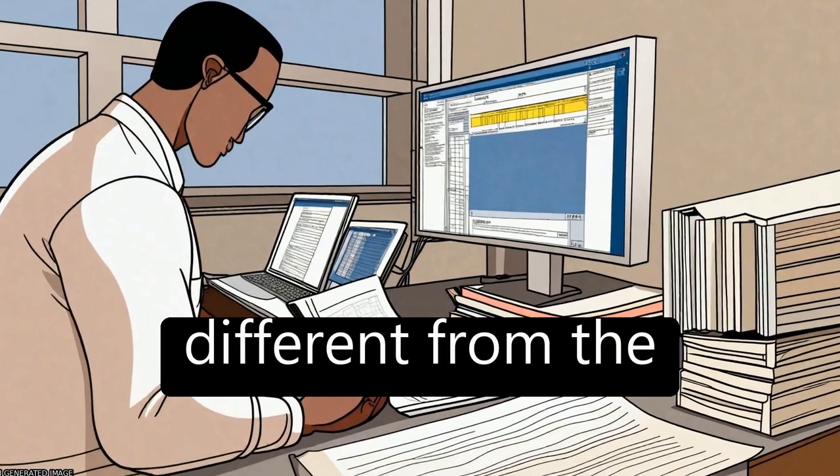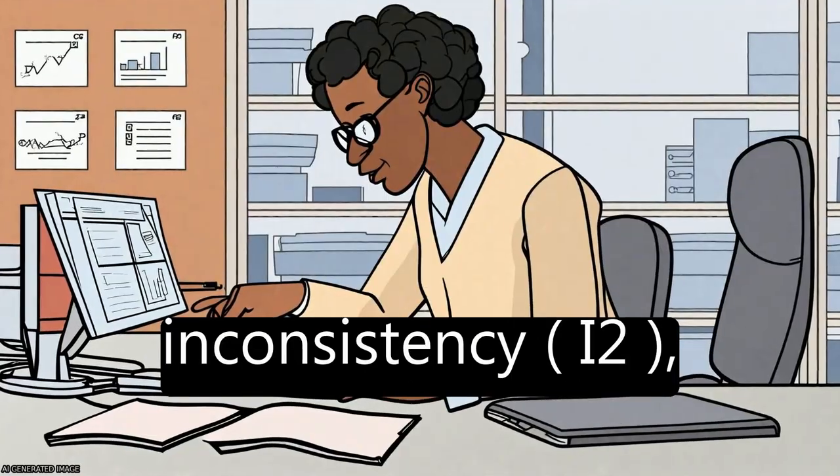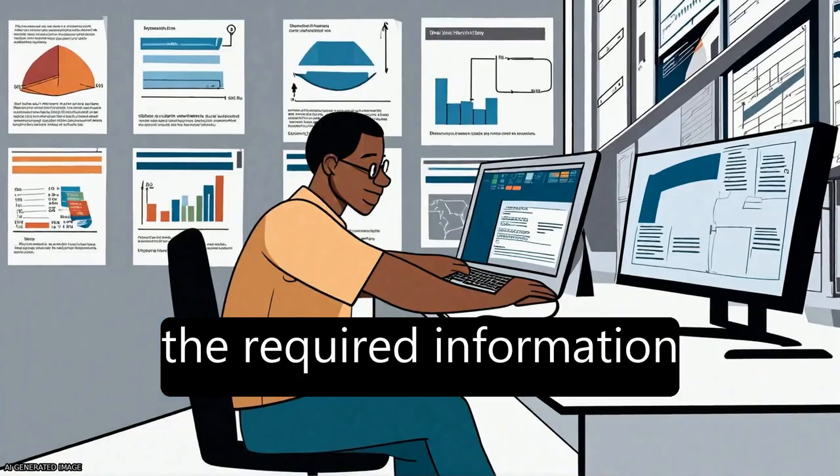The paper shows that D2 is different from the commonly used measure of heterogeneity, inconsistency (I2), which may underestimate the required information size.